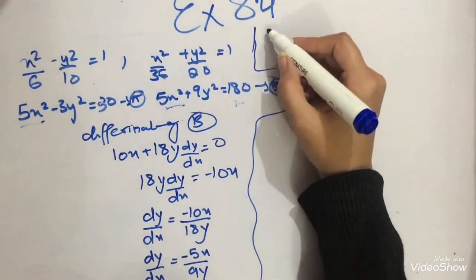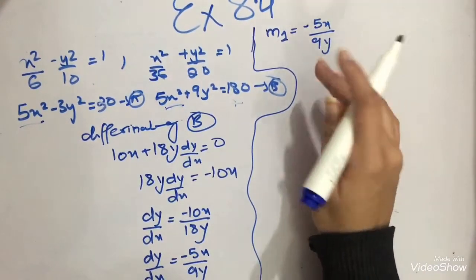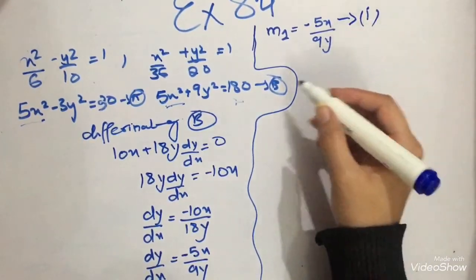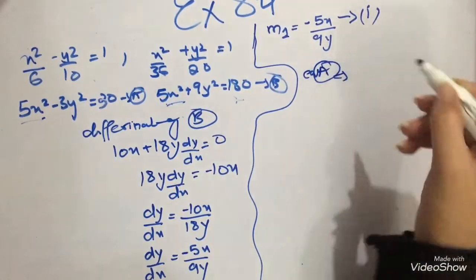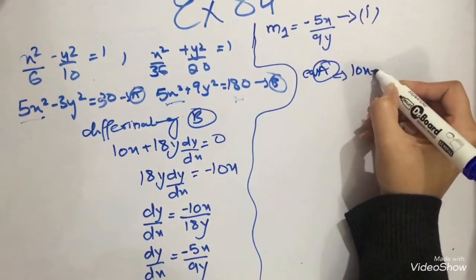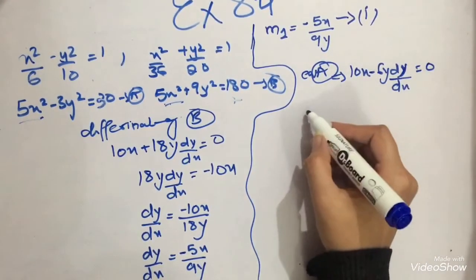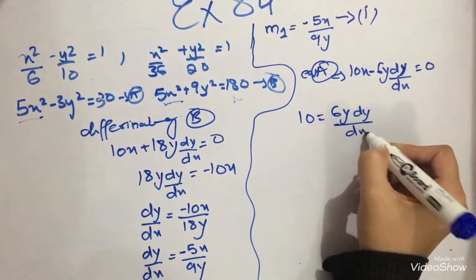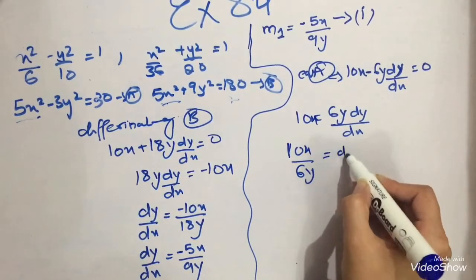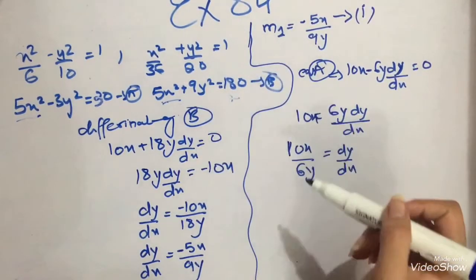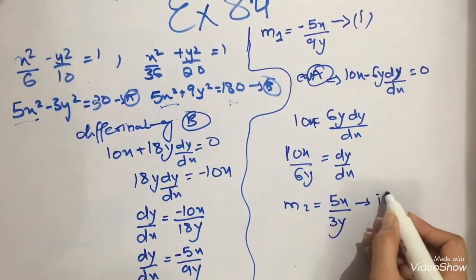So slope m1 equals minus 5x upon 9y. Now I will differentiate equation A: 10x minus 6y dy/dx equals 0. Rearranging gives dy/dx equals 10x upon 6y. Simplifying, slope m2 equals 5x upon 3y. Now I have two slopes m1 and m2.